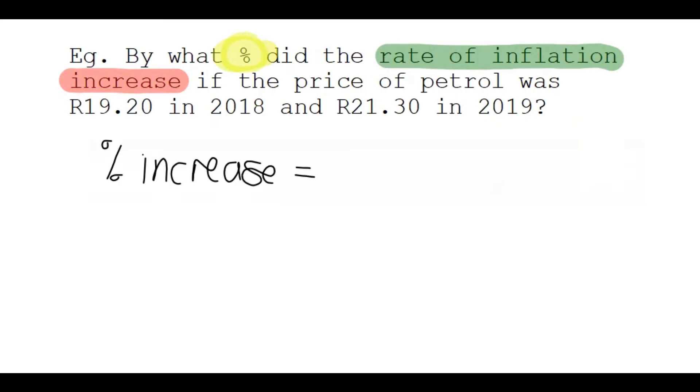There's a formula for that as well. Let's continue reading. If the price of petrol was R19.20 in 2018 and R21.30 in 2019, how do you work a percentage increase? You take the new number or the price minus the old divided by the old one or the first one that was mentioned and you multiply that by 100.